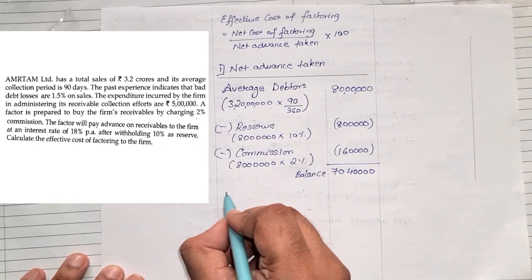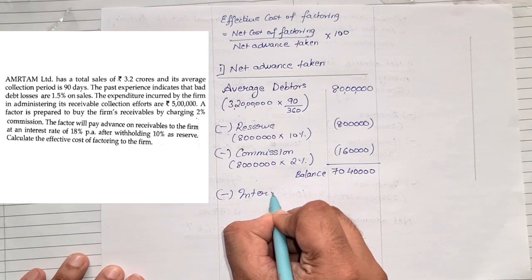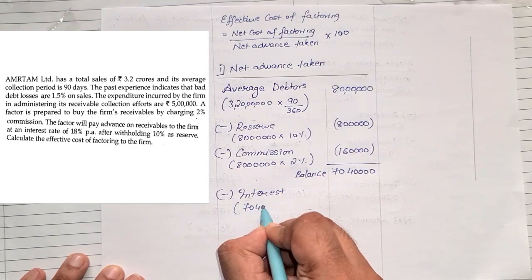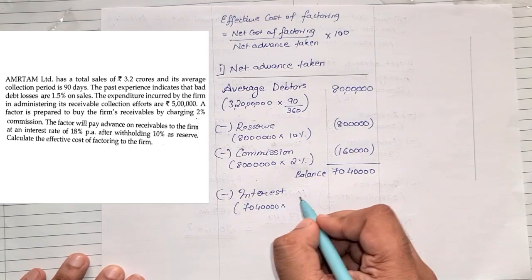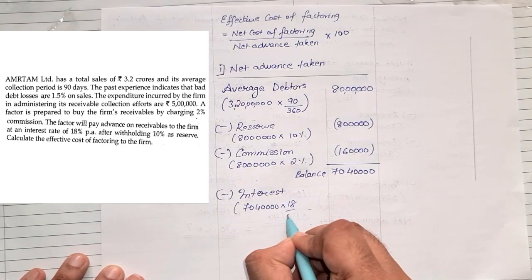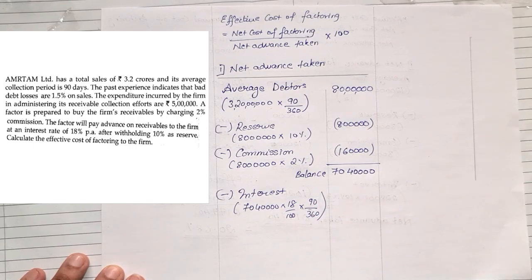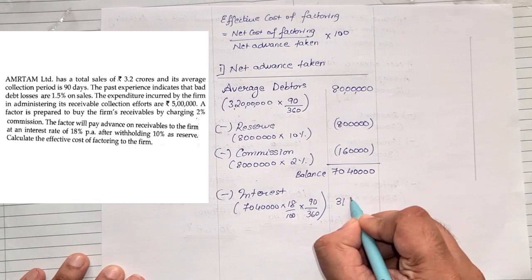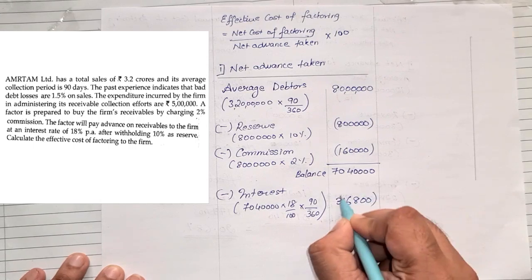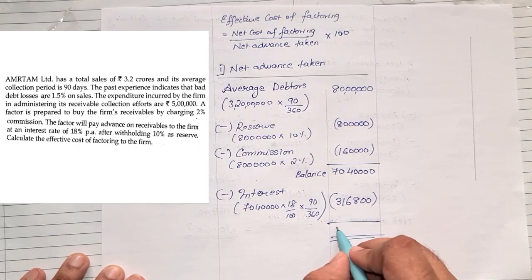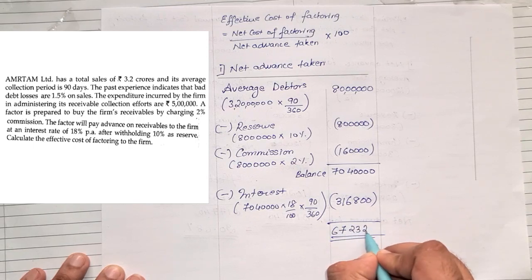From this balance, we calculate less interest. That will be 70 lakhs 40,000 into 18% into 90 days divided by 360. We get the amount as 3 lakhs 16,800. Subtracting, we get 67 lakhs 23,200. This is the net advance taken.